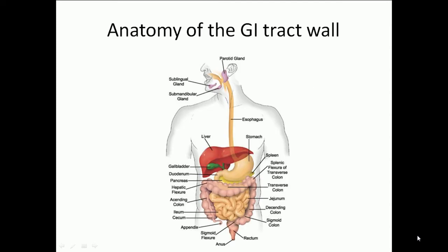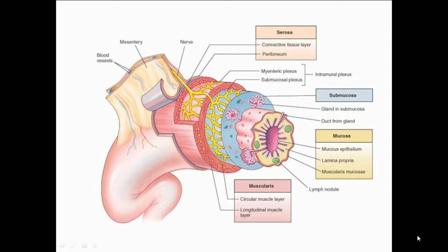The GI tract wall from the esophagus through the large intestine is a tube composed of four concentric layers. From deep, which is the lining of the lumen, to superficial, which is the external covering, these layers are the mucosa, the submucosa, the muscularis, and the adventitia or the serosa.